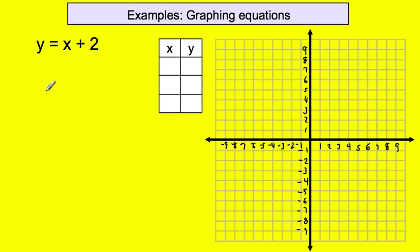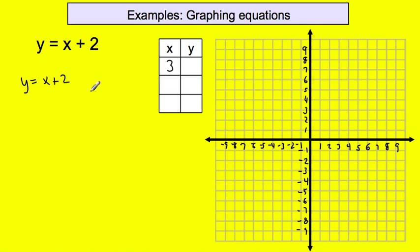The first value I'm going to give for x is 3 — I'll write it on my table. You can choose any values, just use smaller numbers that fit on the graph. Here's how we find ordered pairs: first, write the equation y equals x plus 2. Then substitute the value — we're giving x a value of 3 — so y equals 3 plus 2. Rewriting: y equals 5. When x is 3, y equals 5. That's my first ordered pair: (3, 5).